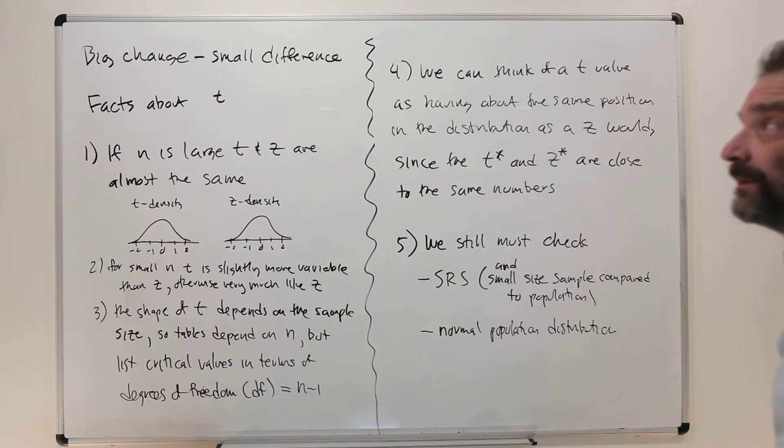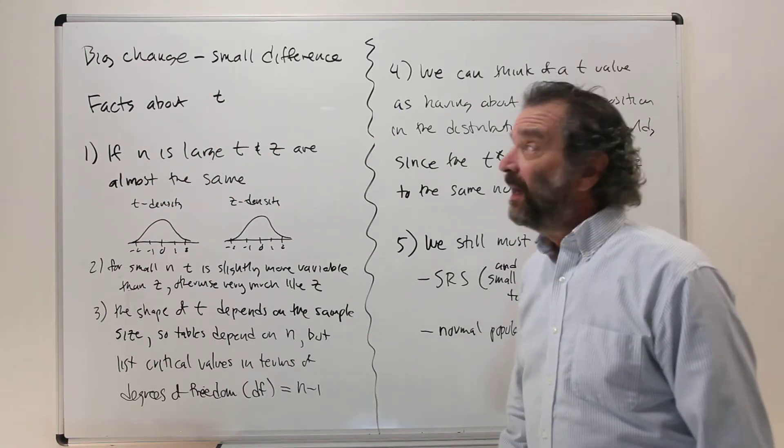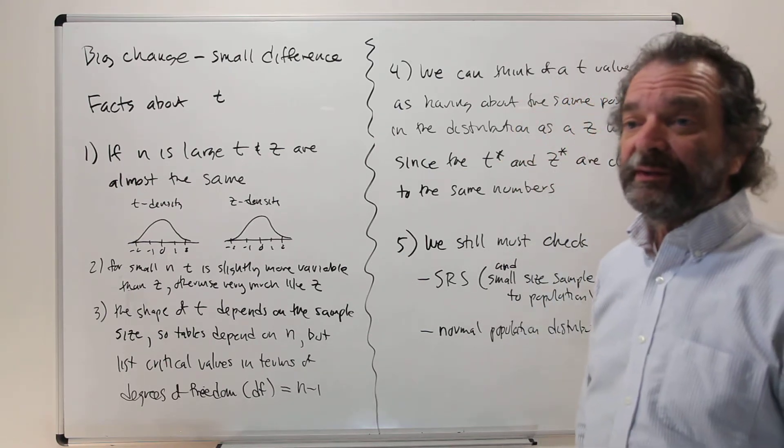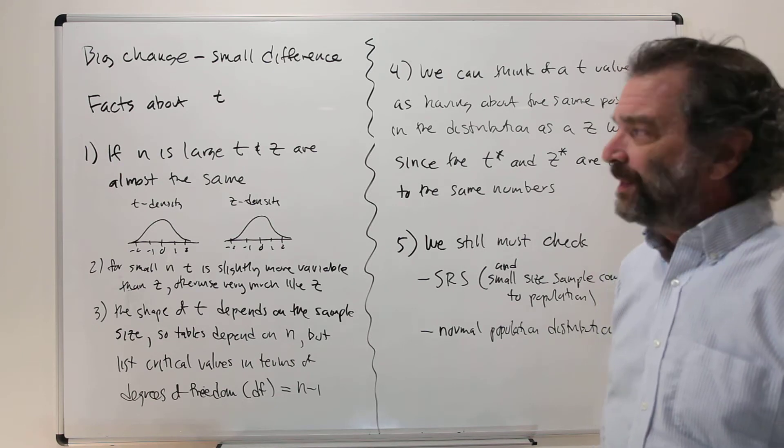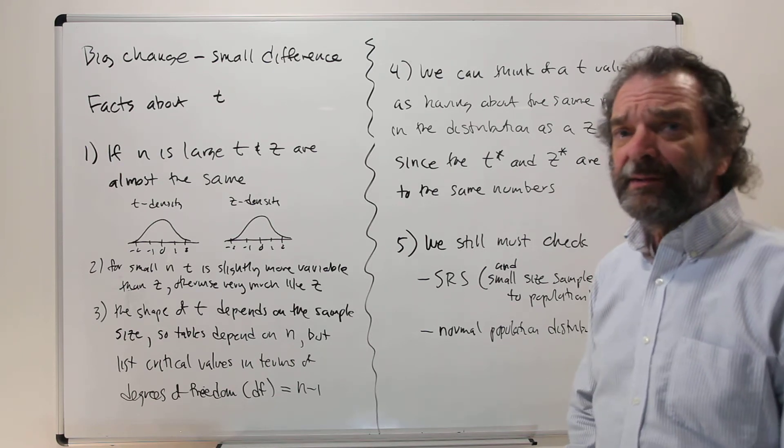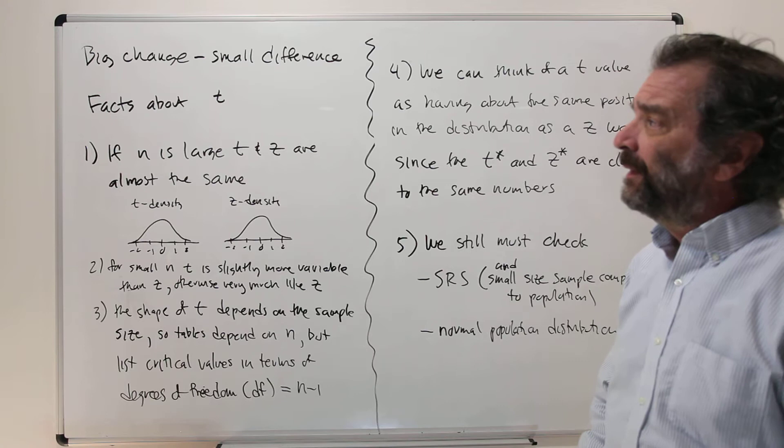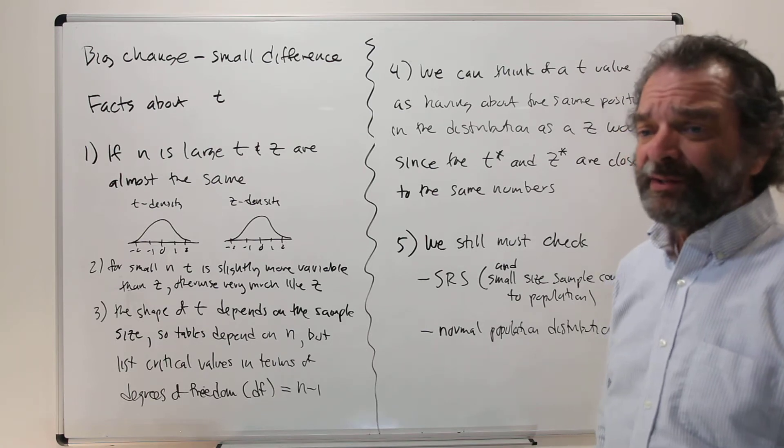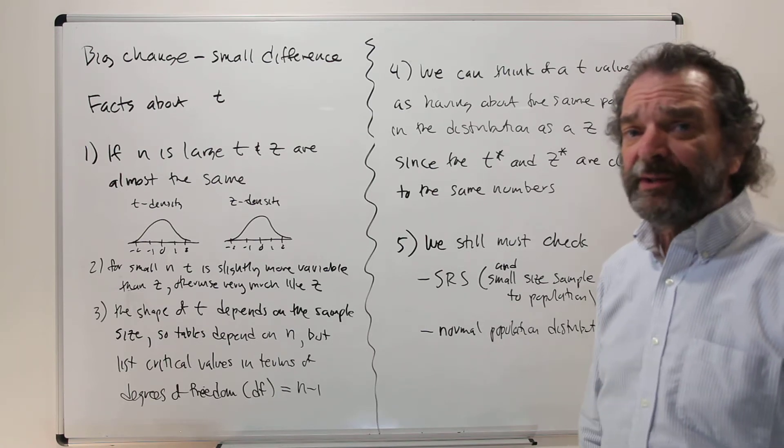So let's talk about some of the details. The title of this slide is Big Change, Small Difference. We've changed things rather dramatically because we replace sigma with s. But in fact, things haven't changed that much at all because t is very much like z.